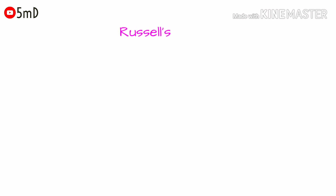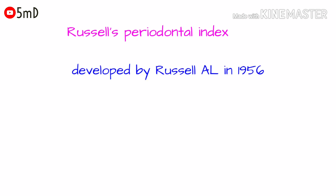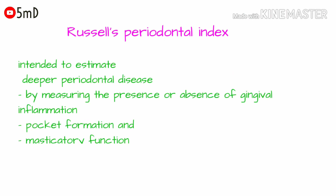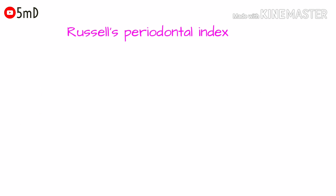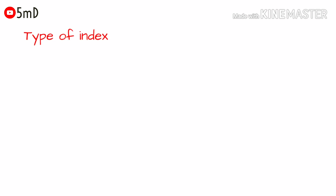Today let us see about Russell's Periodontal Index, shortly known as Periodontal Index. It was developed by Russell in 1956 over a trial period of 10 years. The intention of PI was to estimate deeper periodontal diseases by measuring inflammation of the gingiva, pocket formation, and masticatory functioning efficiency of the teeth. The advantage is that it is useful among large populations, and it has limited use in individuals or small groups.